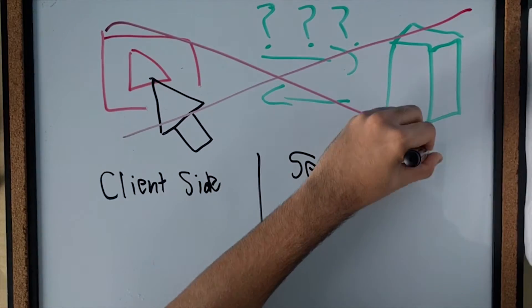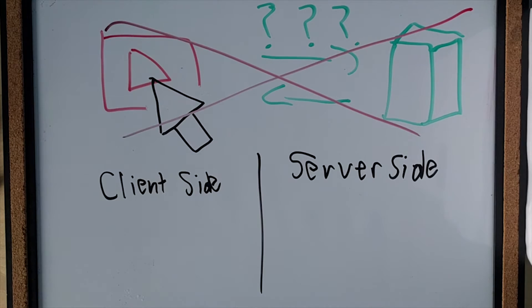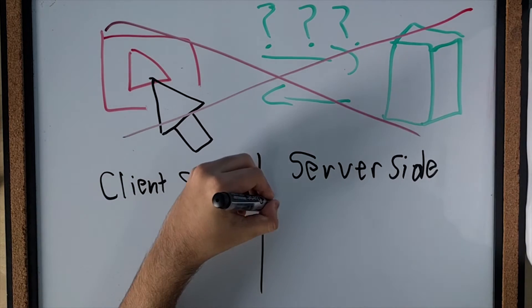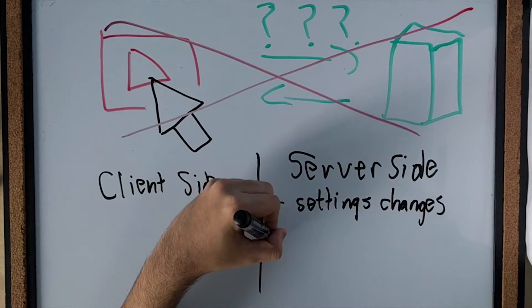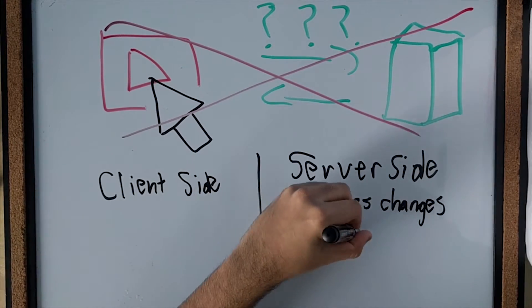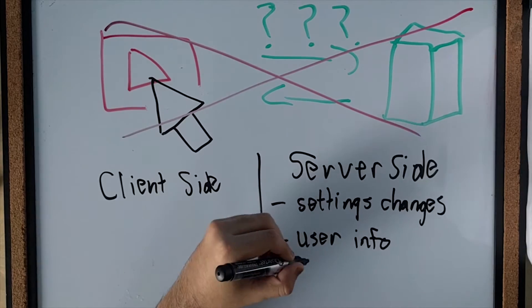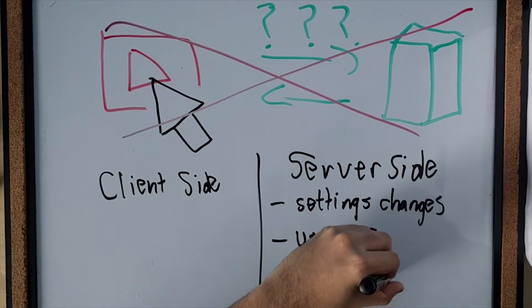Everything you do on a network is separated into two categories, client-side and server-side. Client-side activities have information that is stored on your computer that will often disappear if you reload the page or close the website. Server-side activities are things that will go to the server and become stored in its hard drives.